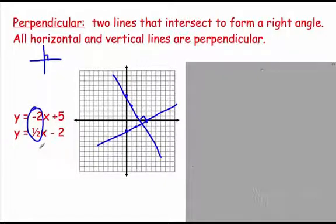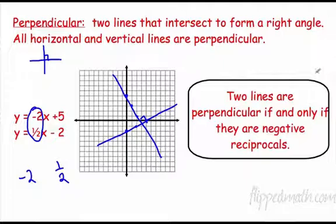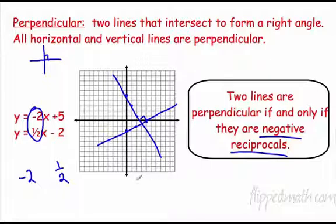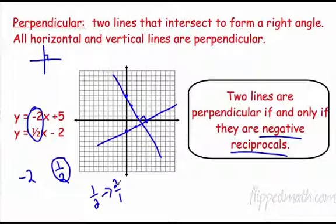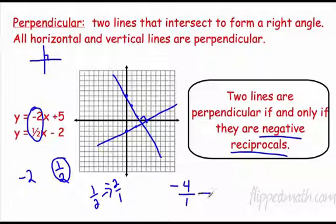So what's true about negative 2 and 1 half? These two lines are perpendicular if and only if their slopes are negative reciprocals. A reciprocal means you take a fraction and flip it — so 1 half flipped becomes 2 over 1, which is just 2. The negative part means if it was positive, now it's negative. For example, negative 4 is negative 4 over 1; its negative reciprocal is positive 1 over 4.